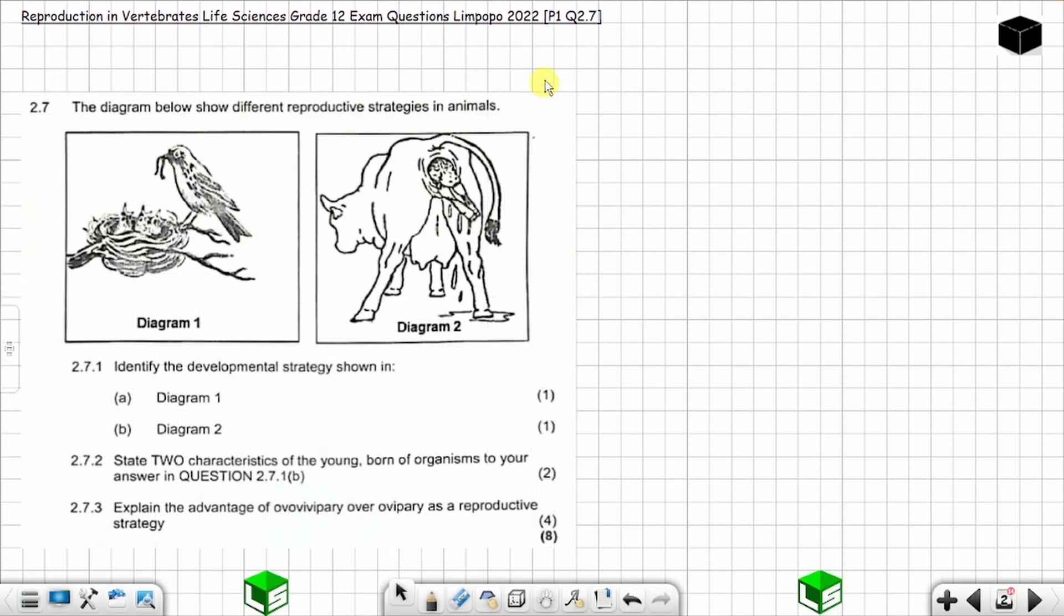Okay, question 2.7 from Paper 1 from Limpopo 2022 on reproduction in vertebrates, Life Sciences Grade 12 exam question. This is question 2.7, let's get started. The diagram below shows the different reproductive strategies in animals.